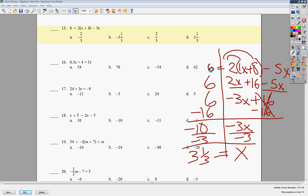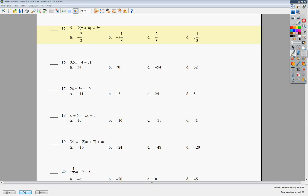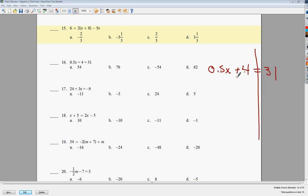Now, number 16, similar thing. It just happens to have a decimal in it, so don't freak out. It's not like it's a huge deal that you can't do. So 0.5x plus 4 is equal to 31. Draw your line. Me, friend, friend to friend. The opposite of plus 4 is minus 4. So I end up with 27 here. These cancelled out. 0.5x. To get rid of 0.5x, I need to divide. By the way, 0.5 is just half, so dividing by half is the same as multiplying by 2. So if I did 27 divided by 0.5, the answer that I'm going to end up with is positive 54. So the answer to number 16 is A.